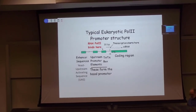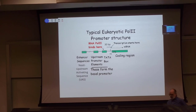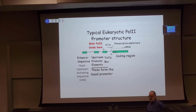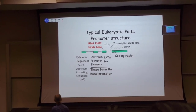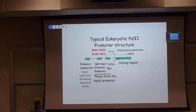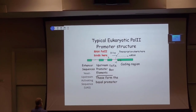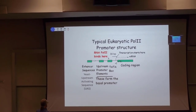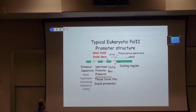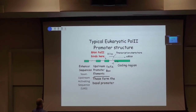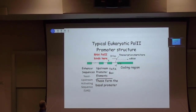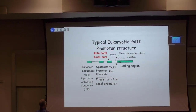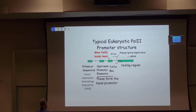Given all this, how do we get transcription from the eukaryotic gene? We've talked about this before — we've got the TATA box, this is the coding region, and transcription will start usually 30 base pairs downstream of the TATA box.